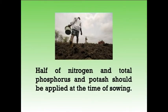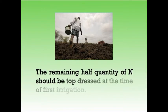Half of nitrogen and total phosphorus and potassium should be applied at the time of sowing. The remaining half quantity of nitrogen should be top-dressed at the time of first irrigation. In rain-fed situations, the whole of nitrogen and phosphorus should be given 5 to 8 cm deep in furrows at the time of sowing. In case of light soils, one-third of nitrogen plus full dose of phosphorus and potassium should be applied as basal, one-third after first irrigation and the rest one-third after second irrigation. Under saline soil condition, the entire fertilizer should be applied as basal at least 8 to 10 cm deep.